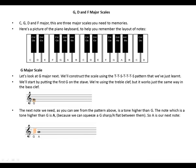The note which is a tone higher than G is A, because we can squeeze a G sharp or A flat between them. So A is our next note. As you can see, it's a tone from G to A. The third note is again a tone up from A. The next tone up is B. We can squeeze an A sharp or B flat in between them. So we can see now we have our first two tones.